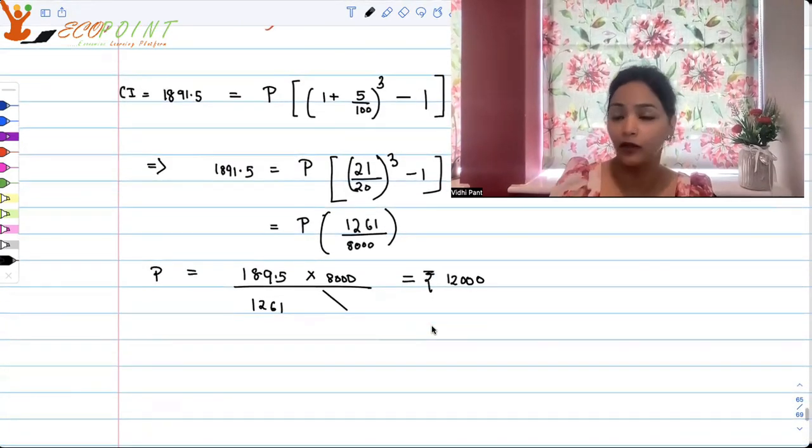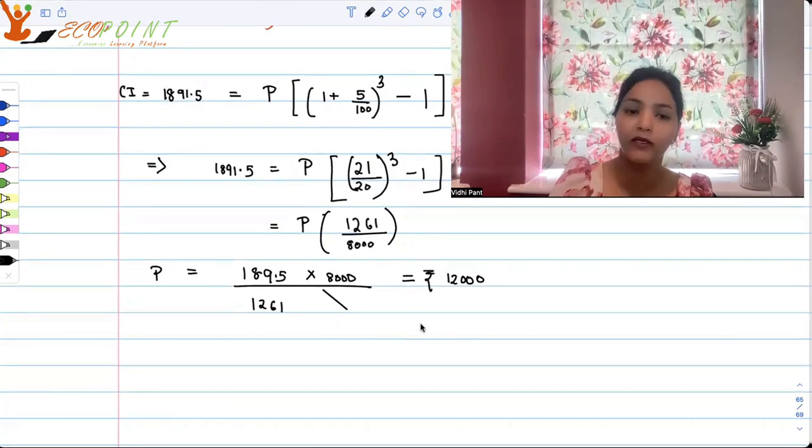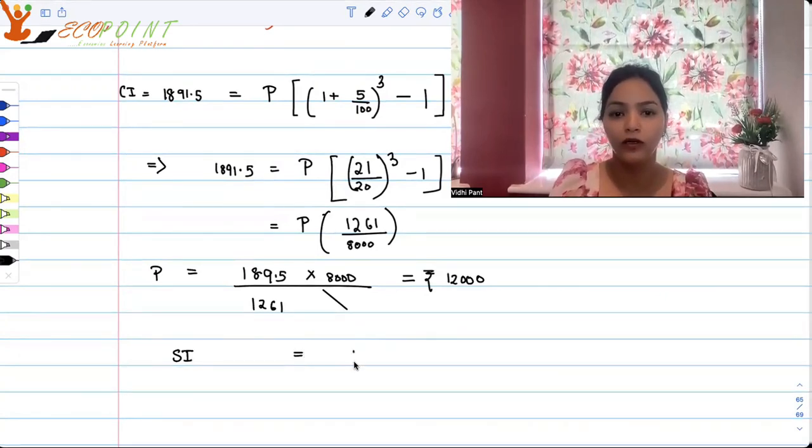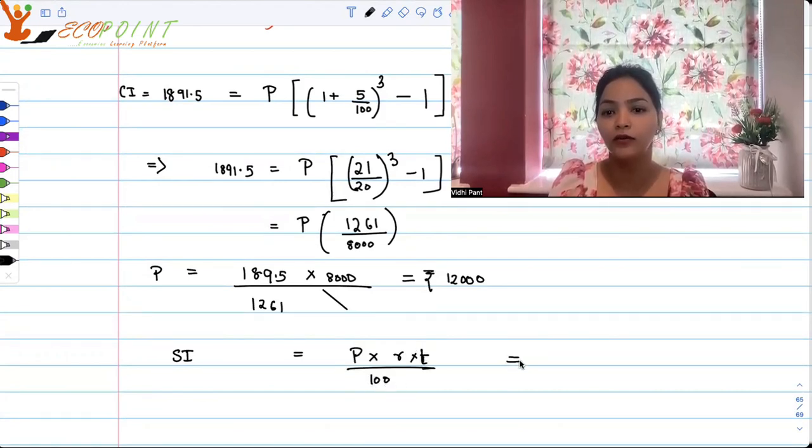And the question is not asking principal, it's asking simple interest. Now, simple interest for two years at 5% on this amount will be equal to P into R into T upon 100. So we have the principal now. So it's 12,000. Rate, we are keeping the same. So 5 multiplied by two years as it is given.